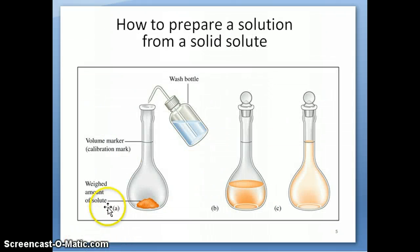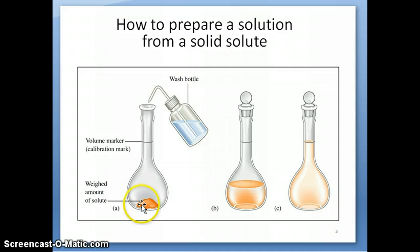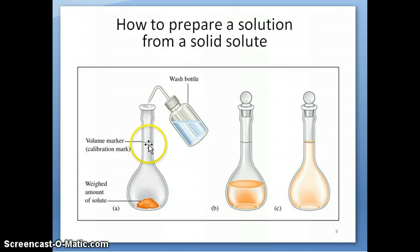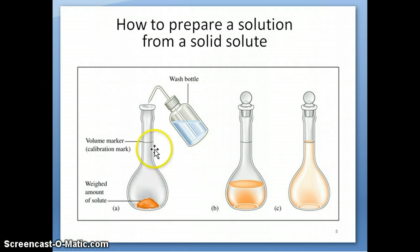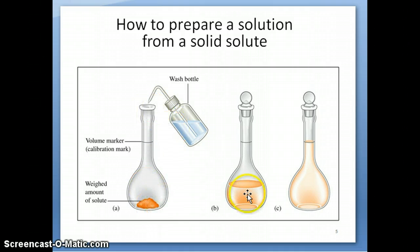Now let's talk about how to prepare a solution starting from a solid. You need a volumetric flask, which has just one line indicating a particular volume — say, one liter. You weigh a certain amount of solute, knowing that bringing the volume up to one liter will yield a certain concentration. You put the solid in the volumetric flask and keep adding water until you reach that one liter mark. That's how you make a reagent stock solution for your experiment.